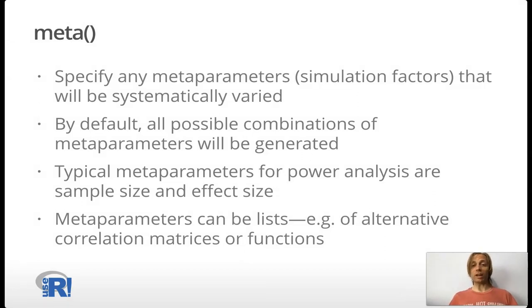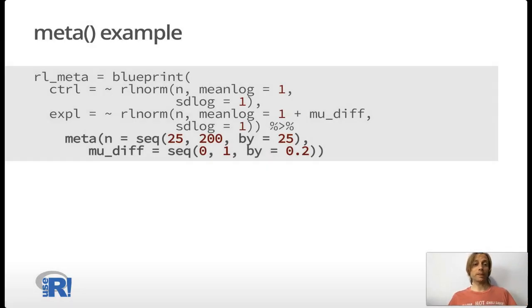Meta allows us to specify these meta parameters or any simulation factors that will be systematically varied. By default, all possible combinations of meta parameters will be generated. Typical meta parameters for power analysis are sample size and effect size, but there's no limitation in simpar to those particular ones. Meta parameters can be lists, for instance, of alternative correlation matrices or functions. The way that we can specify in meta is actually quite flexible. And there's lots of examples in the package documentation. For this example, we set n to go from 25 to 200, and mu diff to go from 0 to 1 by 0.2. This is similar to how we specified it in base R, but now Simpar knows that these are meta parameters and treats them without us having to explicitly do that looping over a condition matrix.